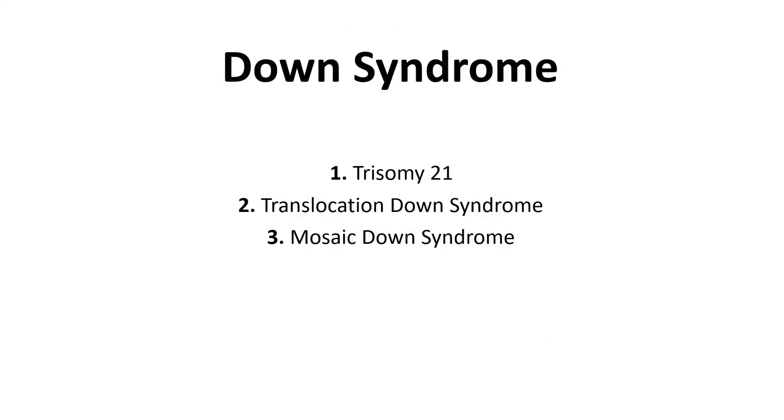But how does it happen? What causes it? Let's explore this question in a bit more detail. To begin, Down syndrome is classified into three types.